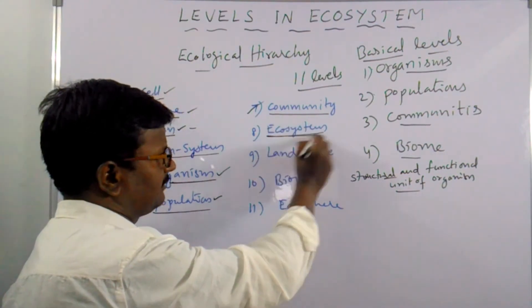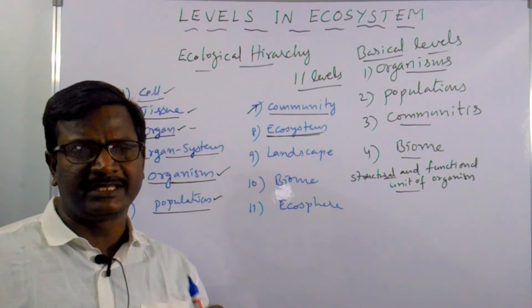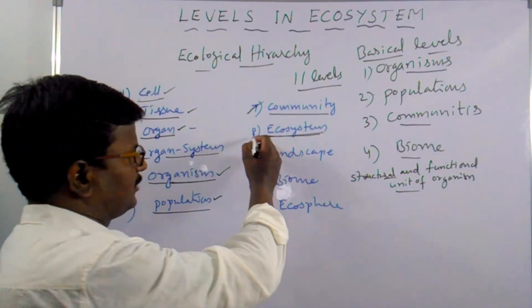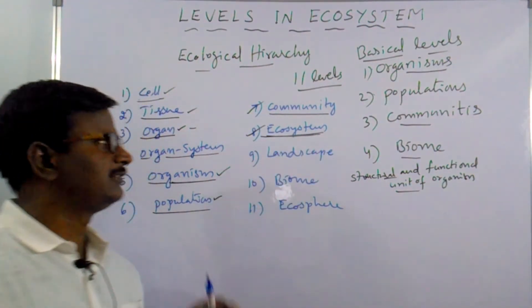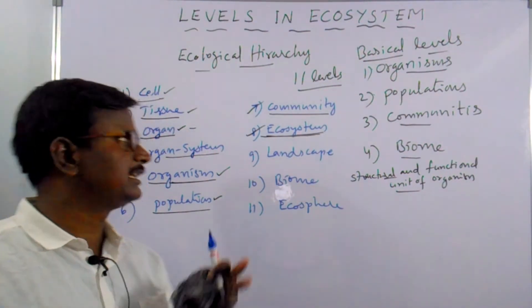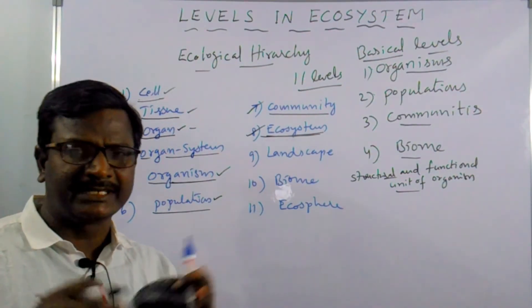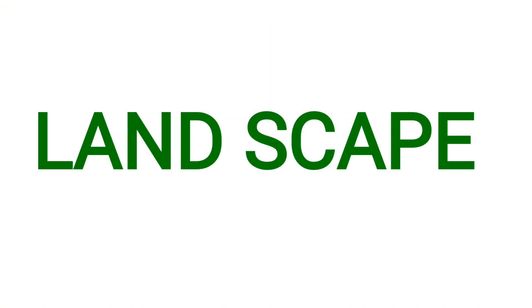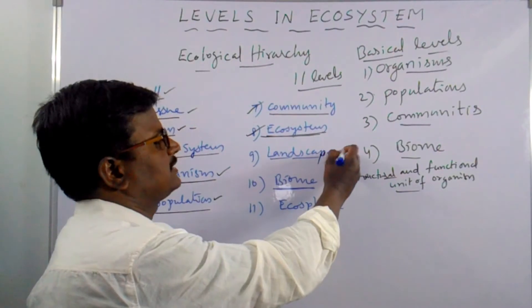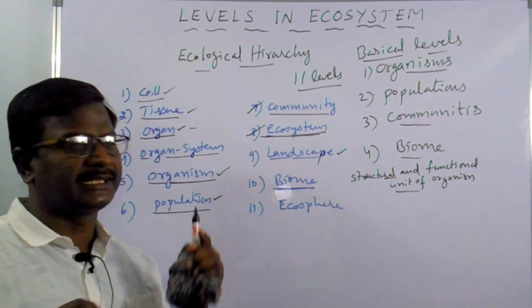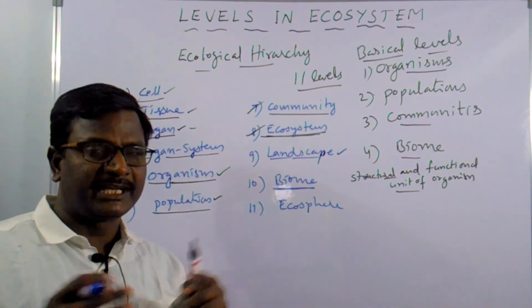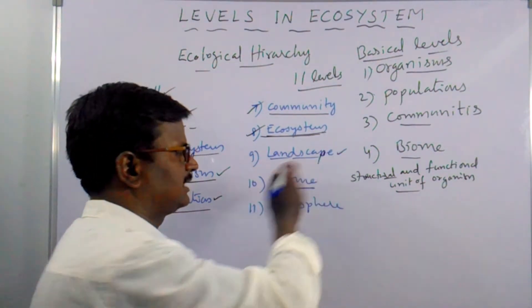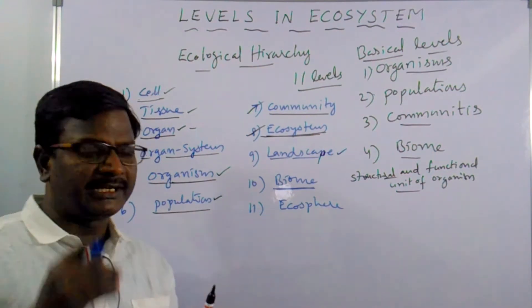The next level is ecosystem. Ecosystem is the unit of nature and the unit of ecosphere. Ecosystem means different communities living in an area, interacting with themselves. The next level of ecological hierarchy is landscape. Landscape is the unit area that has different types of ecosystems confined within specific boundaries.